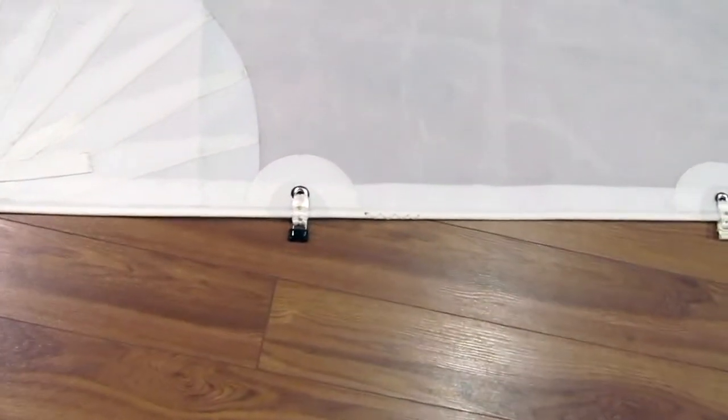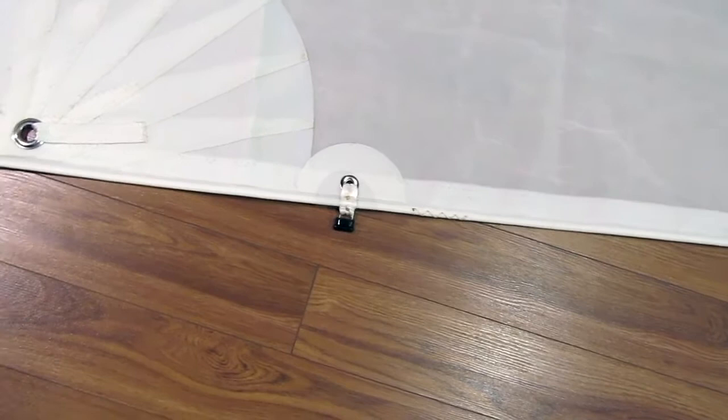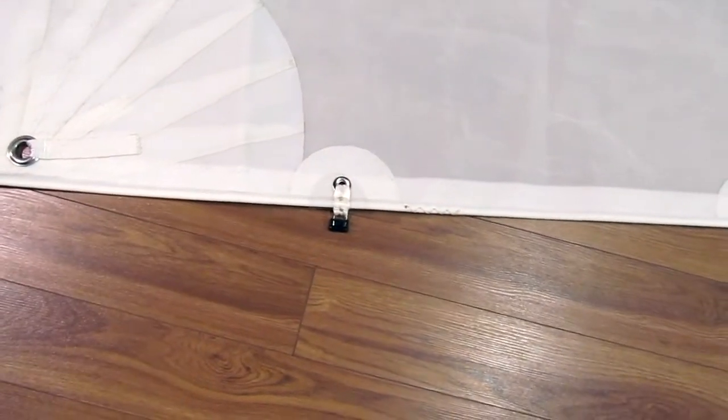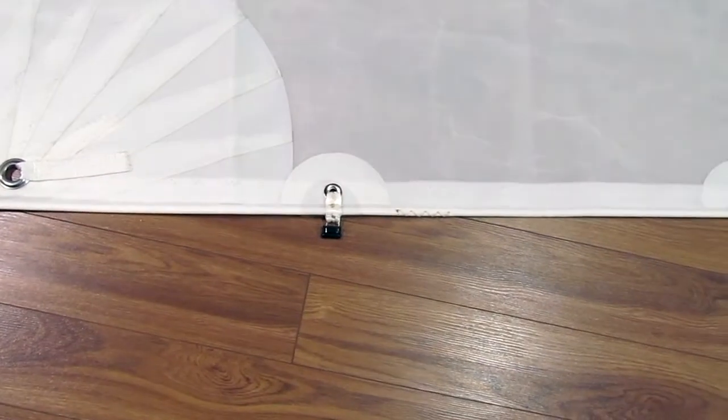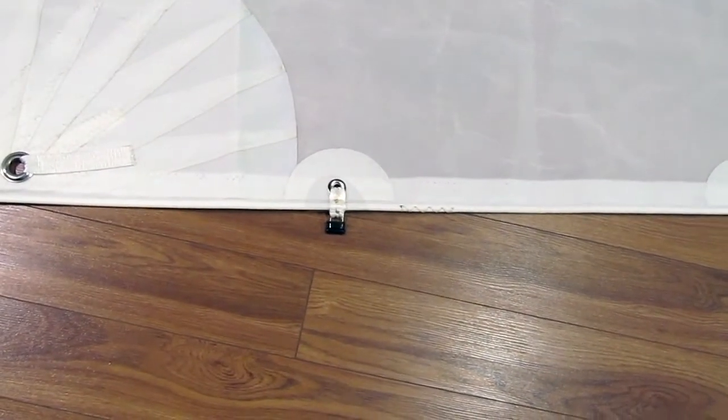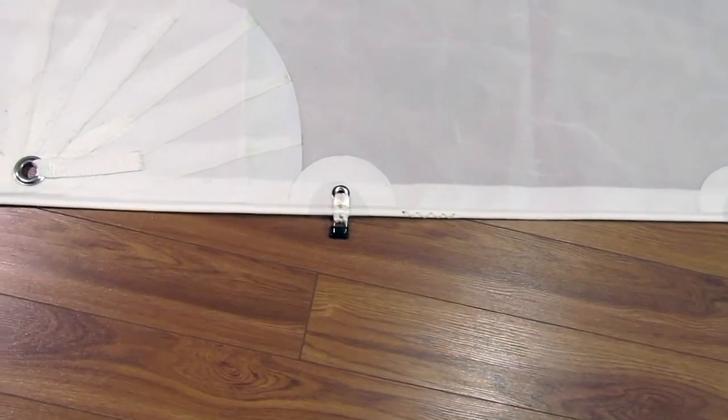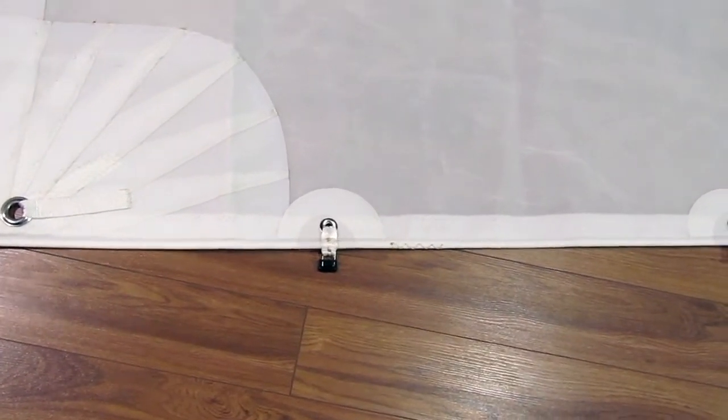One more thing about sliders while I'm talking about them: you'll notice that there's also a patch, a half circle patch, around the slider. That is very important. It's a reinforcement for the slider that makes sure you don't rip any of the luff grommets out of the sail when the wind picks up.